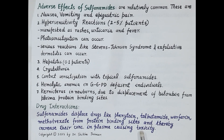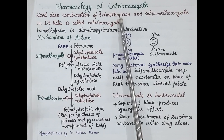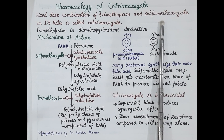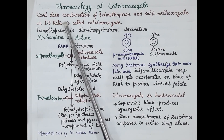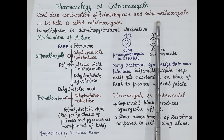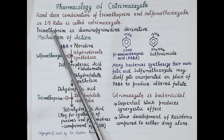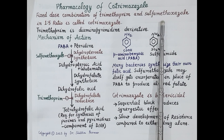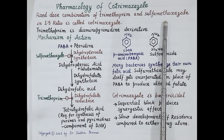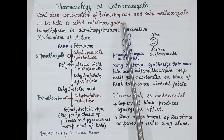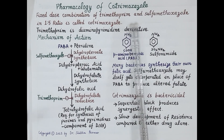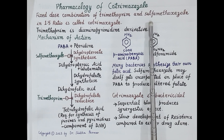Now let's discuss the pharmacology of cotrimoxazole. Sulfonamides alone are not used in the treatment of systemic infections. Cotrimoxazole is a fixed-dose combination of trimethoprim and sulfamethoxazole in a 1:5 ratio — for example, 80 mg of trimethoprim combined with 400 mg of sulfamethoxazole. Sulfamethoxazole is an intermediate-acting sulfonamide, and trimethoprim is a diaminopyrimidine derivative that is bacteriostatic like sulfamethoxazole. But when combined together, they exert bactericidal action.